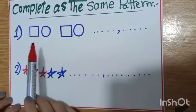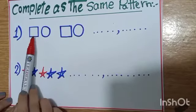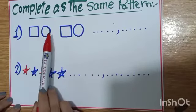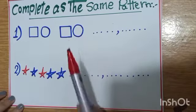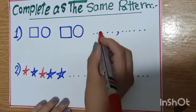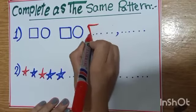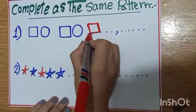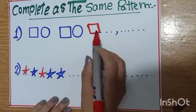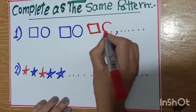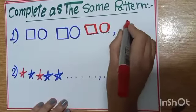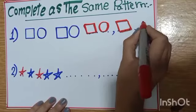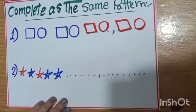The first equation, it starts square, circle. Another square, circle. So I will complete as the same pattern. I will draw square and circle. Another one, square and circle.